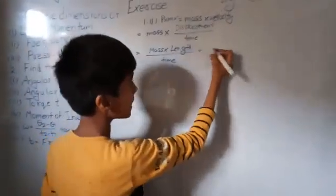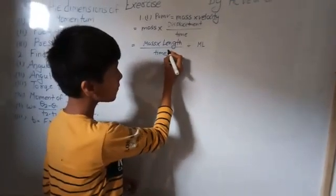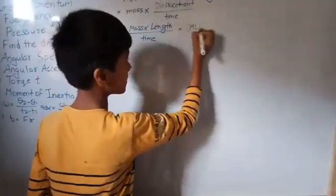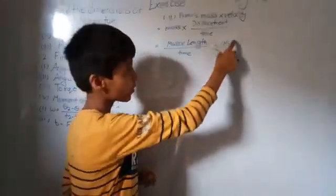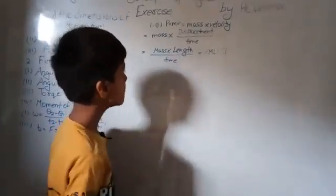So we write this as mass into length divided by time, with all three as base quantities. This gives us [MLT⁻¹]. The T is in the denominator, so we convert its power to negative: T power minus one. This is the dimensional formula for linear momentum. The negative power arises because we brought T from the denominator to the numerator, and since the original power was one, it becomes minus one.